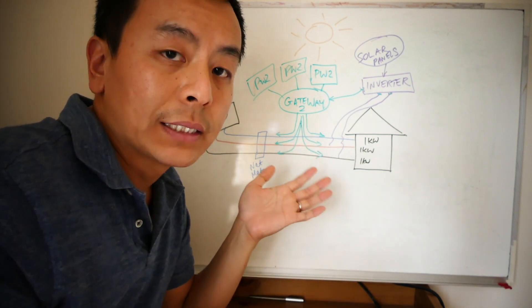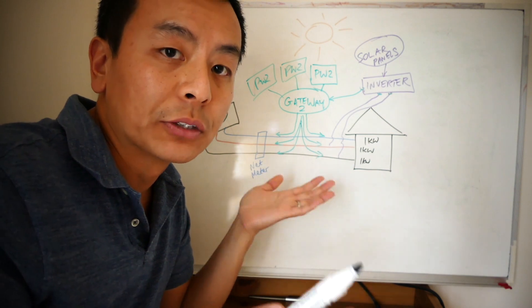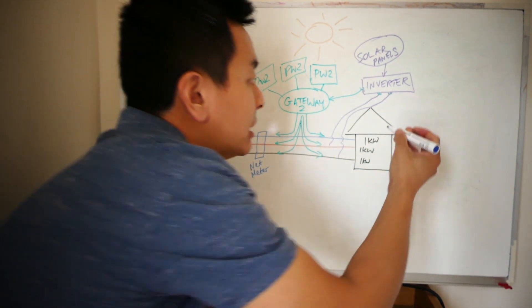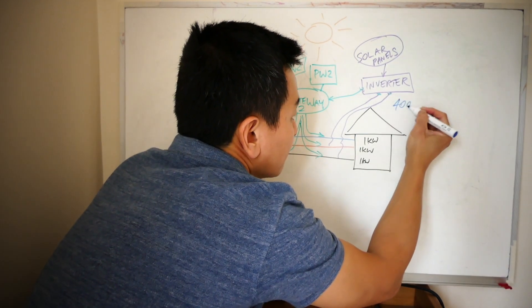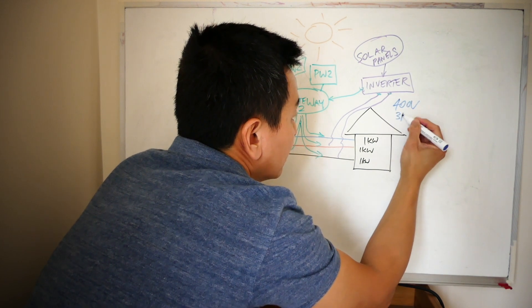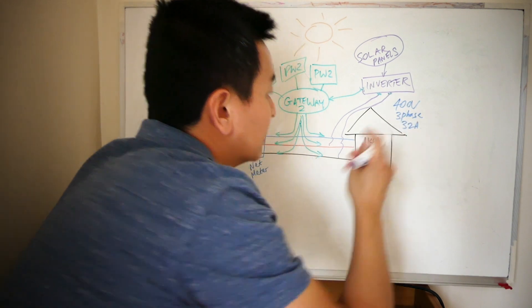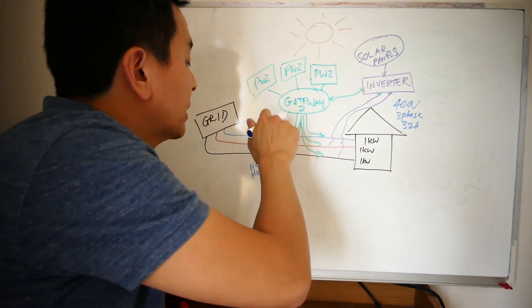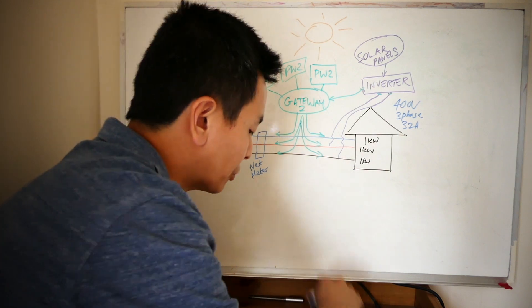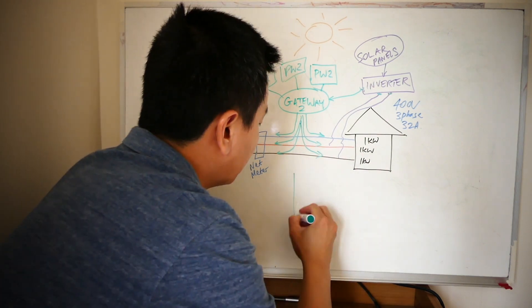At three-phase, presumably at 32 amps per phase. So in that case, that's impossible, because the Powerwall 2 is AC coupled, and what do I mean by that?